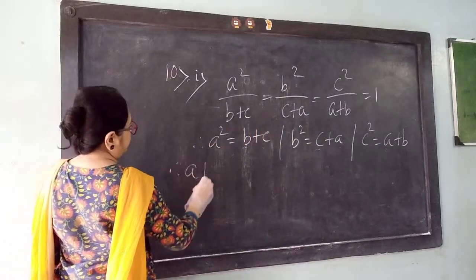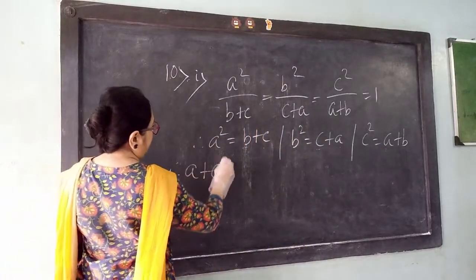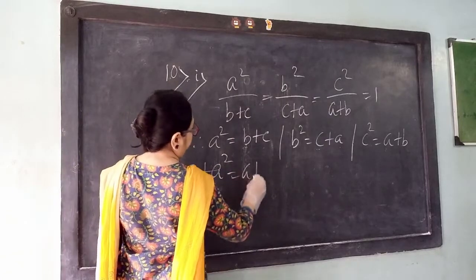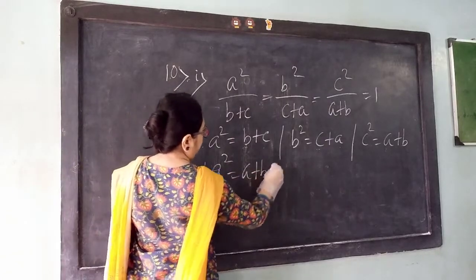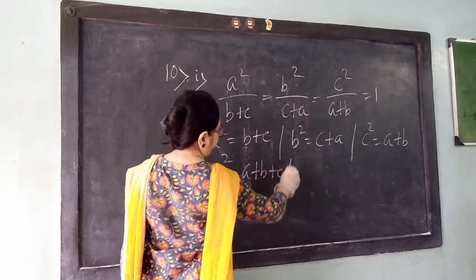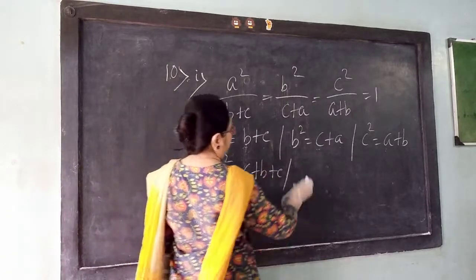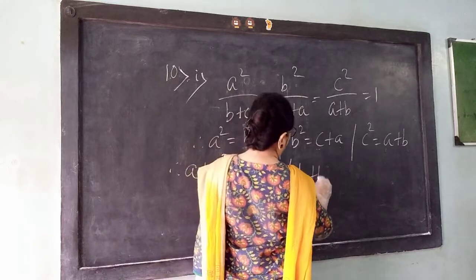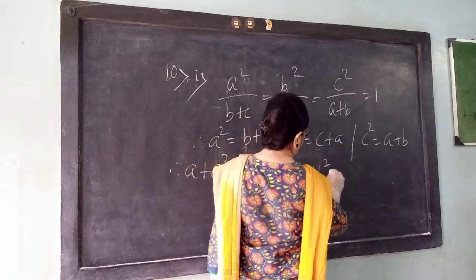So after addition, I am getting right hand side as A plus B plus C. Similarly, here adding B with both sides, I am getting the same.